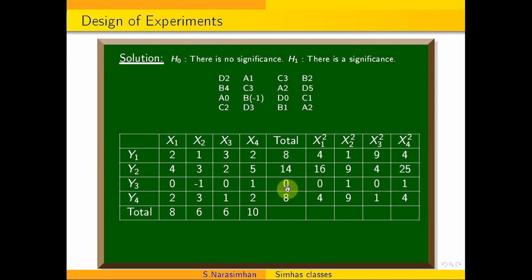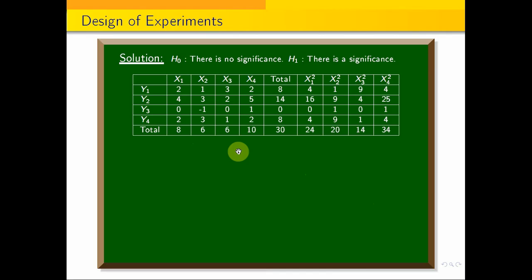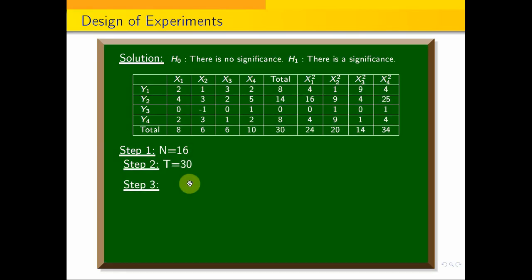Adding column-wise and row-wise gives us totals of 8, 6, 6, 10. Step 3: Correction Factor (CF) equals T squared by n, that is 30 squared by 16, which equals 56.25. Use a calculator to divide.